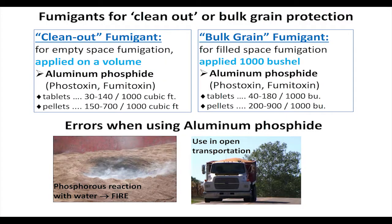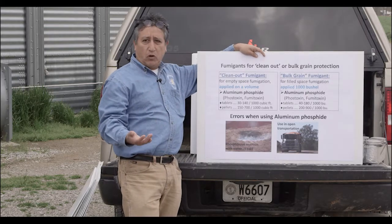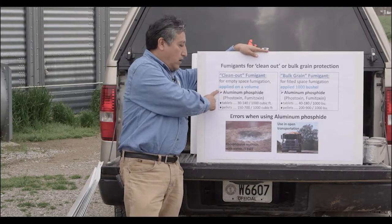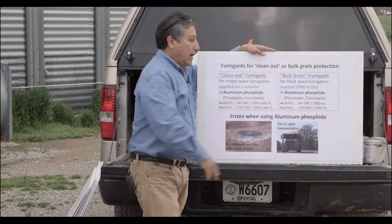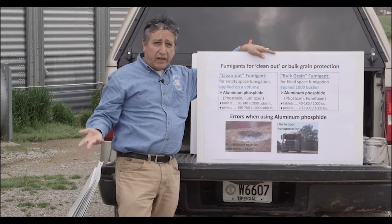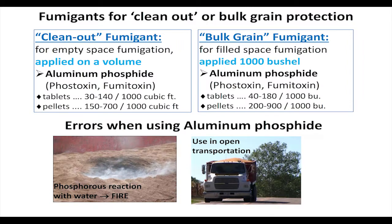One thing that farmers sometimes do wrong is using the incorrect rates of different products. For example, one product is commonly used for clean-out when the silo is empty, and another is used for bulk grain. How the product is applied is different — one is applied by the volume of the silo, the other by the weight of the grain. Making mistakes here can cause resistance to develop due to lower rates being used.